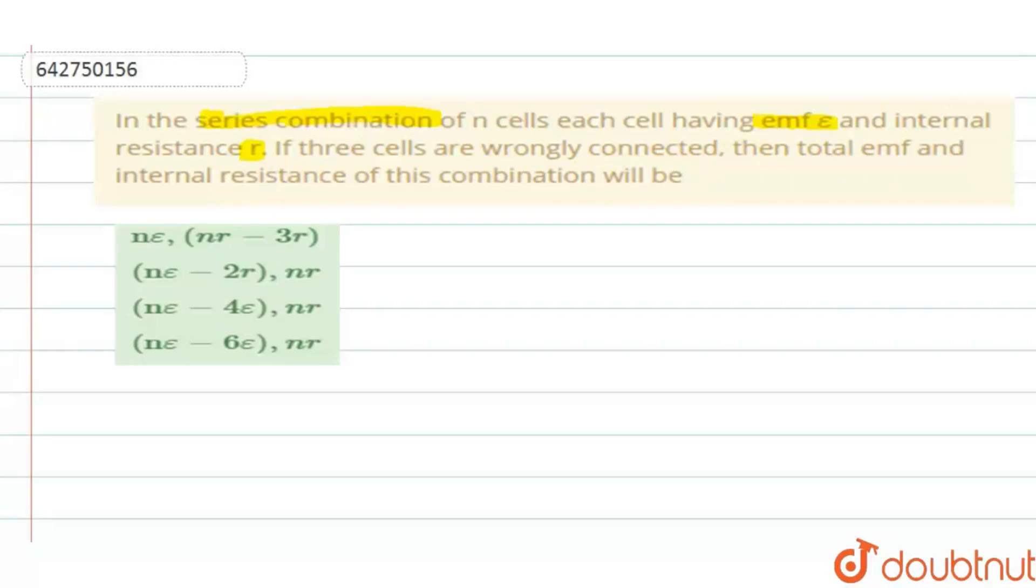Now, what they are saying in the question is, they have a series combination of N cells. So in all the N cells, they have the same EMF E and internal resistance R. But in between, some three cells are connected with opposite polarity. Wrongly connected means what? Like this.